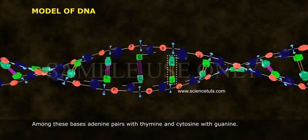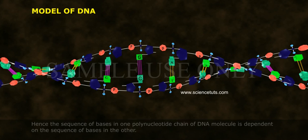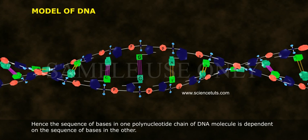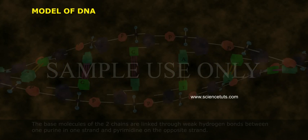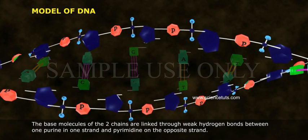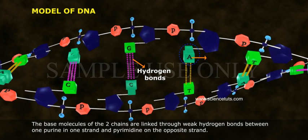Among these bases, adenine pairs with thymine and cytosine with guanine. Hence, the sequence of bases in one polynucleotide chain of the DNA molecule is dependent on the sequence of bases in the other. The two chains are therefore said to be complementary to each other.